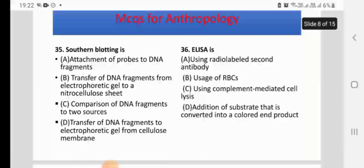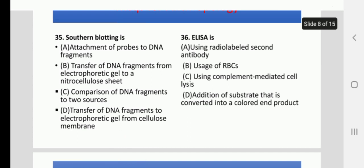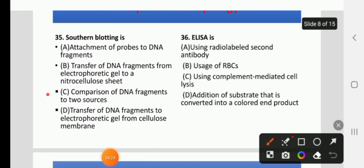Southern blotting is — A: attachment of probes to DNA fragments, B: transfer of DNA fragments from electrophoretic gel to a nitrocellulose sheet, C: comparison of DNA fragments from two sources, or D: transfer of DNA fragments to electrophoretic gel from cellulose membrane. The right answer is B.